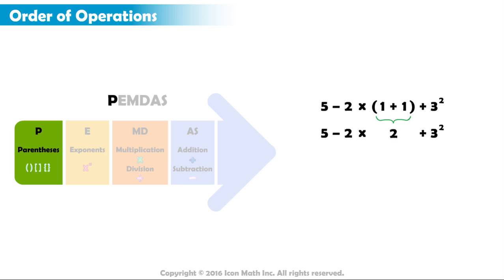Next in the order of operations, or PEMDAS, is exponents. We have 3 to the power of 2. 3 to the power of 2 equals 3 multiplied by 3, and that's equal to 9.